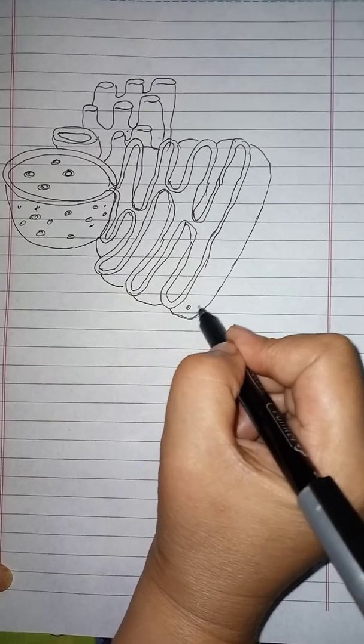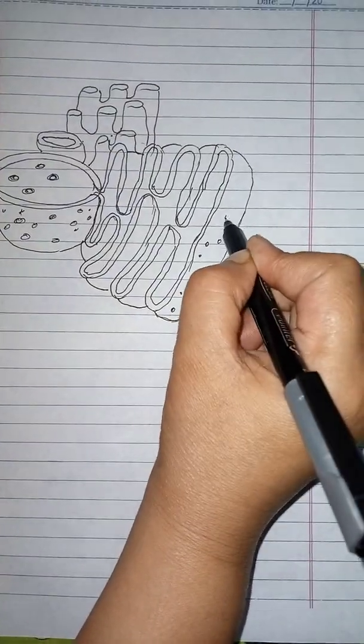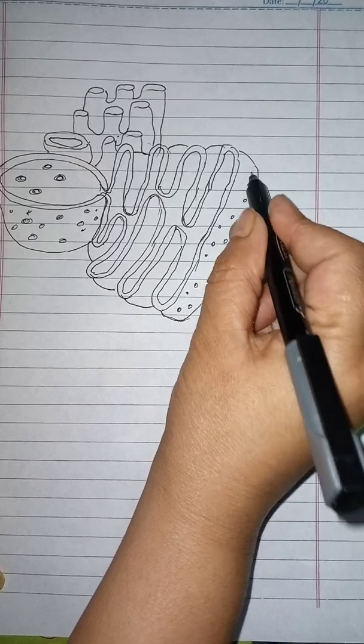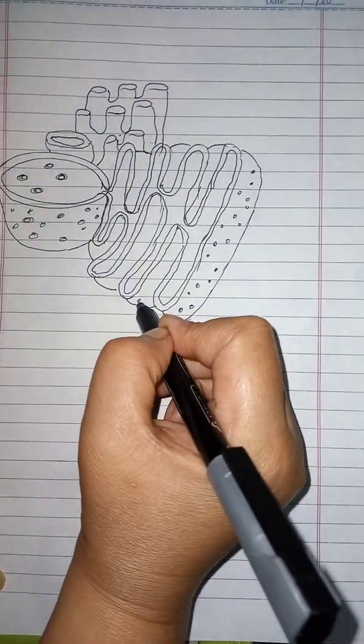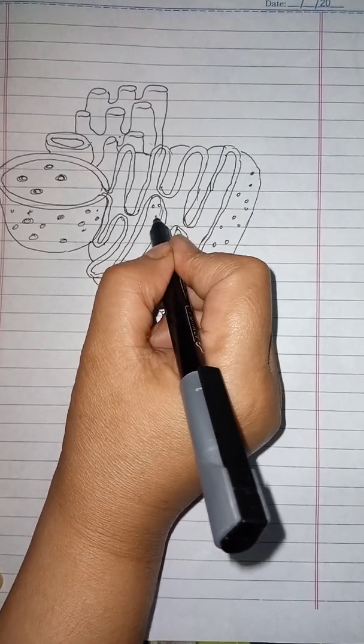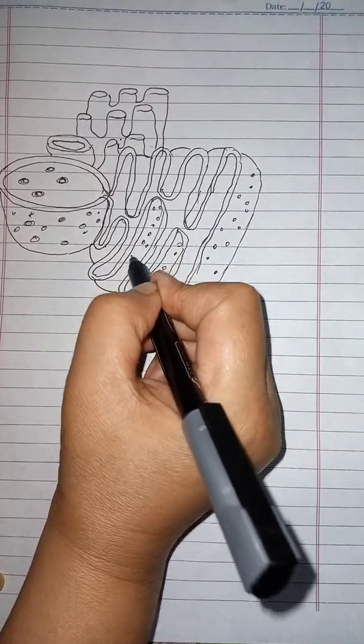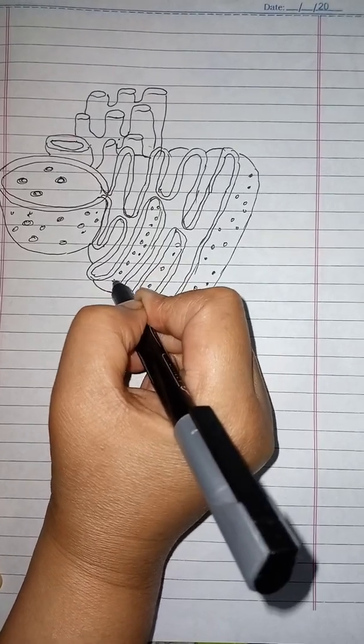Now draw ribosomes on it. You don't need to draw ribosomes in the channels, inside the channels. On the upper surface you have to draw them.